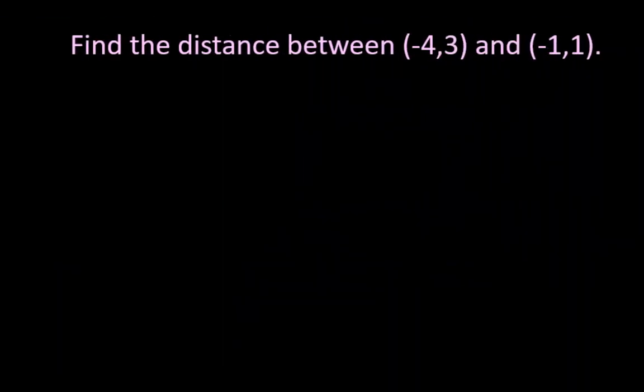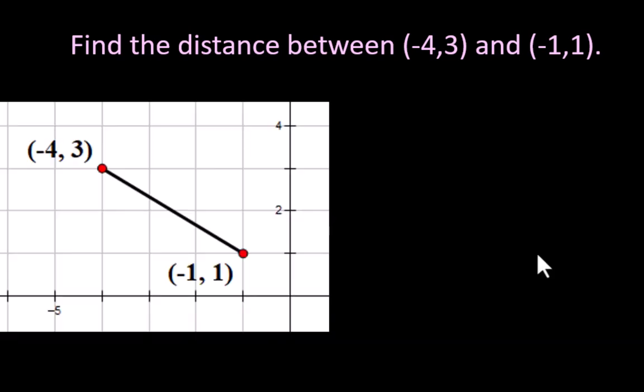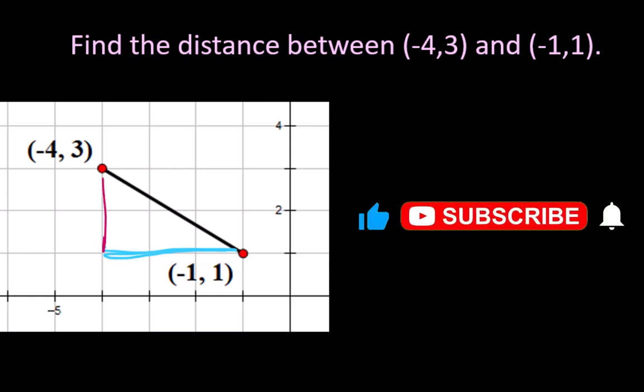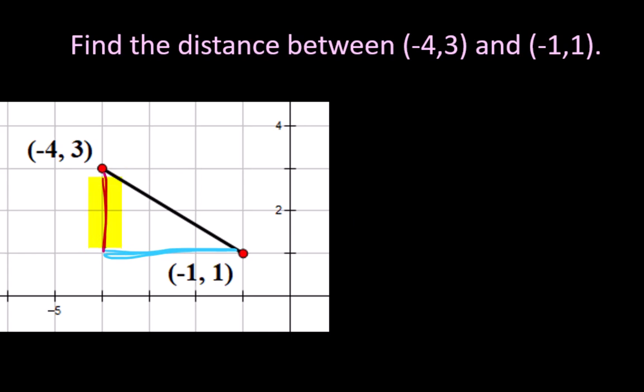This problem is going to be a little bit harder but not in how we do it in how the answer comes out. Okay we're going to do this the way we did the last one by making a triangle. This is the change in our x horizontal change. This is the change in the y up and down changes. This is obviously two boxes but we also need to be able to do that for math sometimes. So if I look at the y coordinates this is a positive 3 and this is a positive 1. 3 minus 1 obviously equals 2.